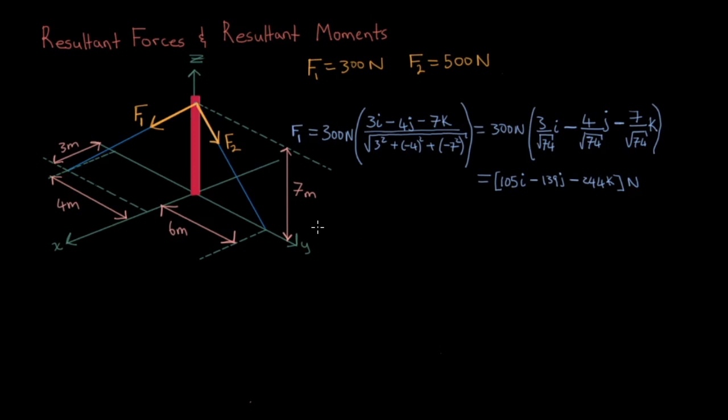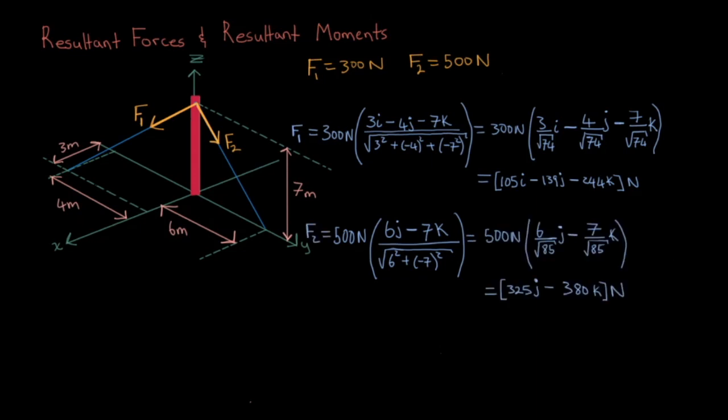Now what about F2? Well, we'll do the same procedure. F2 goes down 7m on the z-axis, and 6m on the y-axis. So our unit vector will be 6j-7k divided by its magnitude. Then we'll multiply by 500N and then simplify. This will give us the vector 325j-380k.